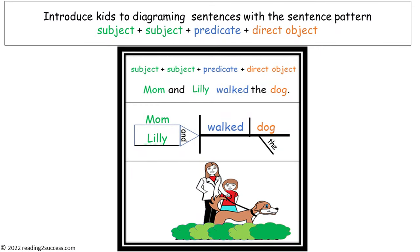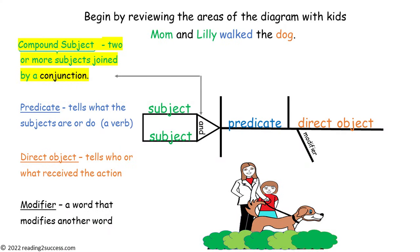Now introduce kids to diagramming sentences with the pattern subject plus subject plus predicate plus direct object, which is also called compound subject plus predicate plus direct object. Begin by reviewing the areas of the diagram with kids. This diagram differs from the first because it has a compound subject — two subjects joined together by a conjunction, the word and.